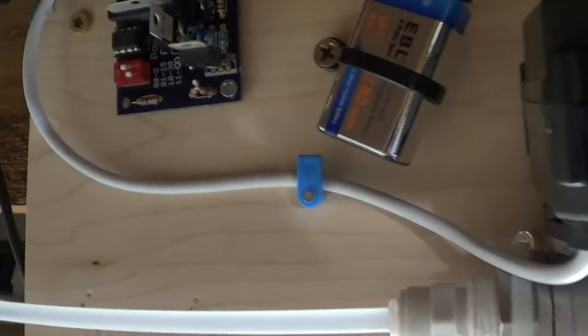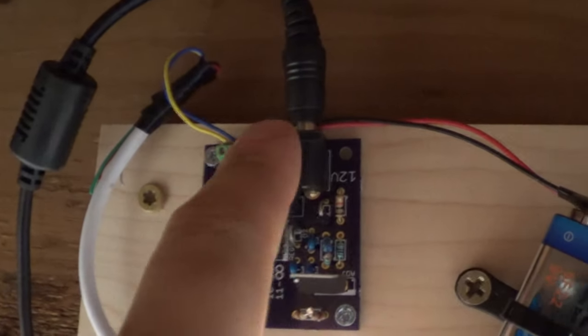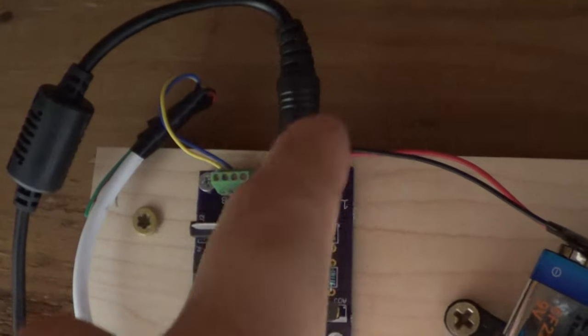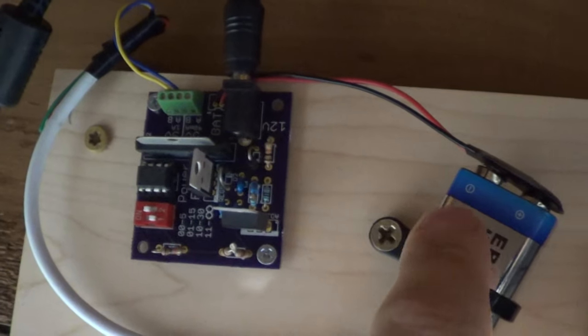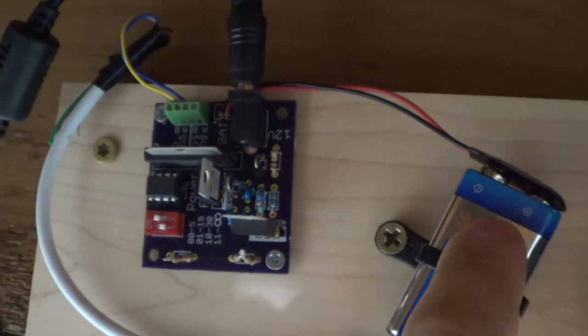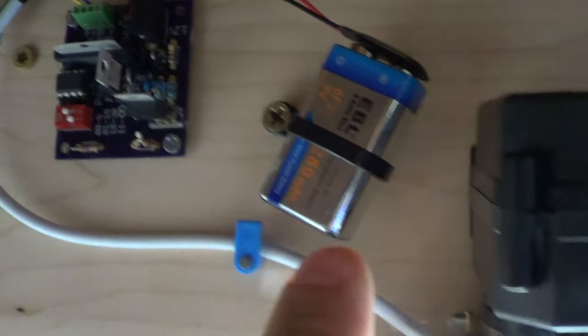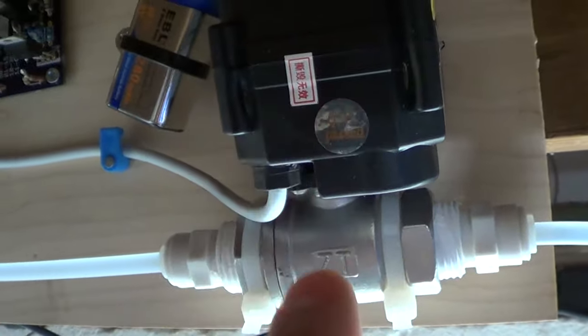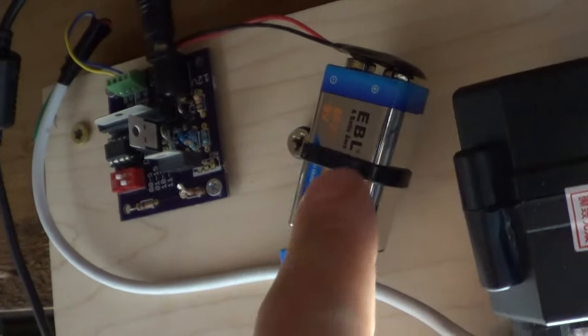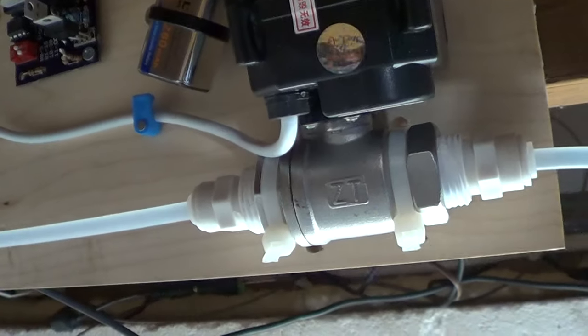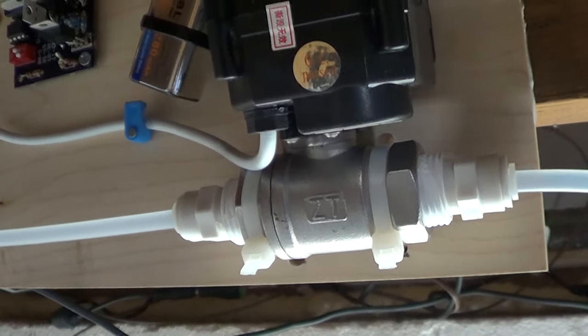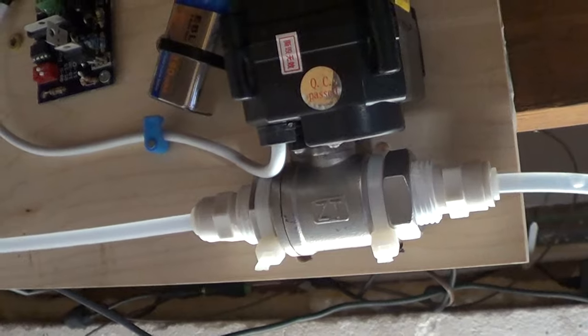In the case of a power outage, what will happen is all of a sudden it won't get 12 volts from here, and the only source of power it gets is the 9 volts from the battery, and then it tells this motor to shut using the power that is remaining in this battery. And this motor only has to turn on for about five seconds to shut that valve, and then it's off.